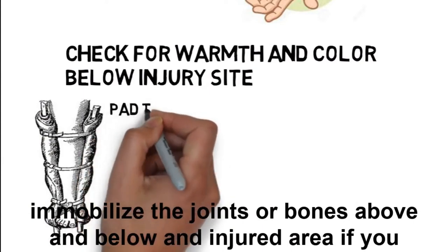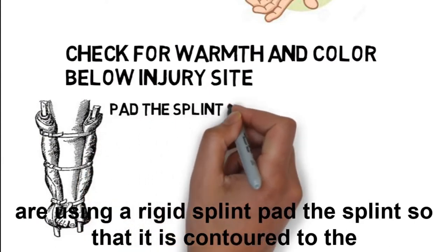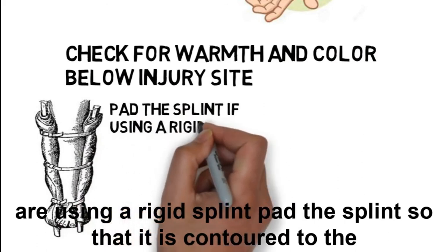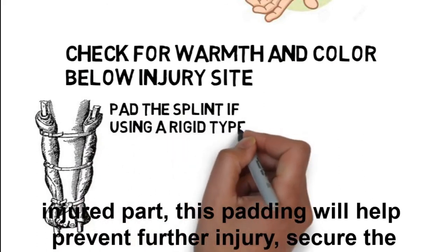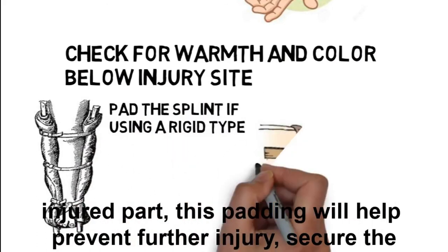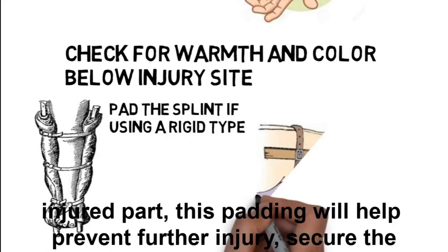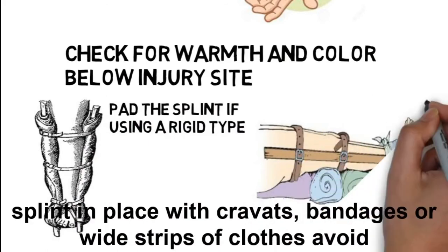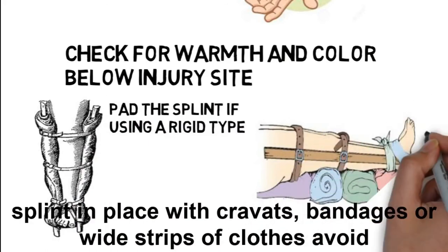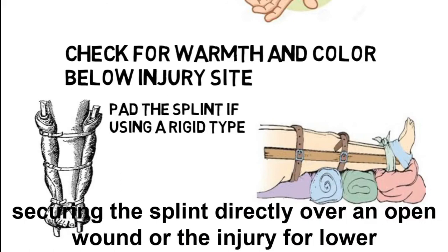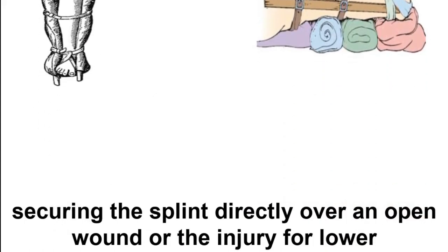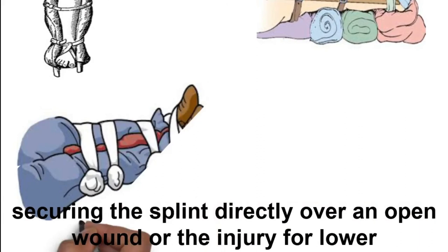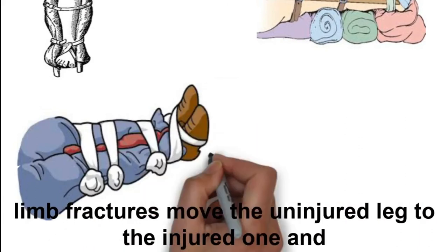Apply the splint to immobilize the joints or bones above and below the injured area. If you are using a rigid splint, pad it so that it is contoured to the injured part — this padding will help prevent further injury. Secure the splint in place with cravats, bandages, or wide strips of cloth. Avoid securing the splint directly over an open wound or the injury.